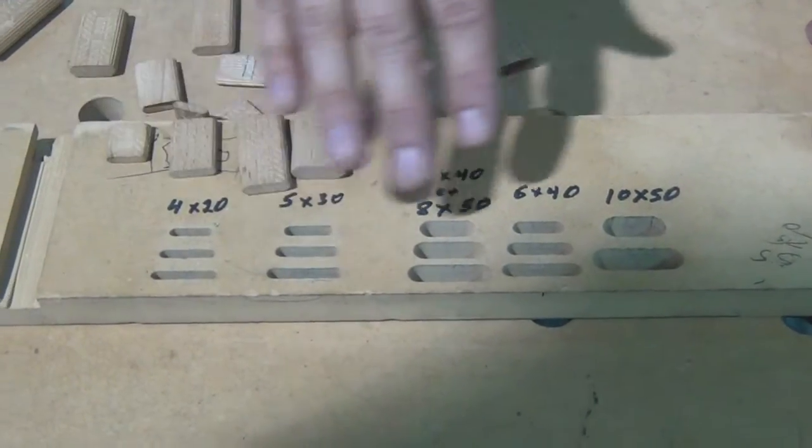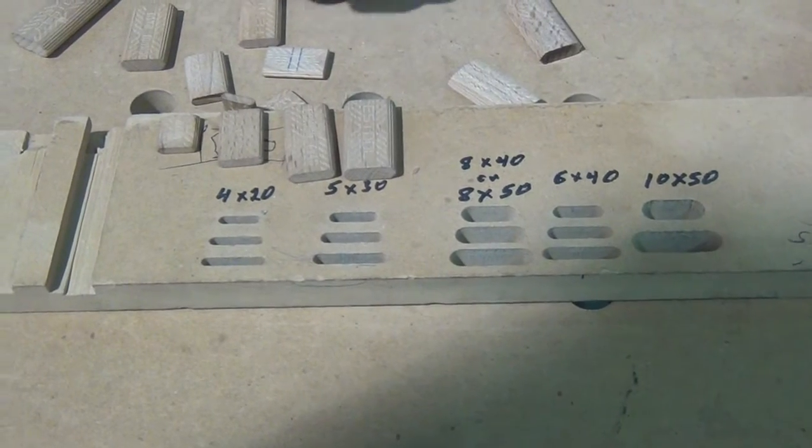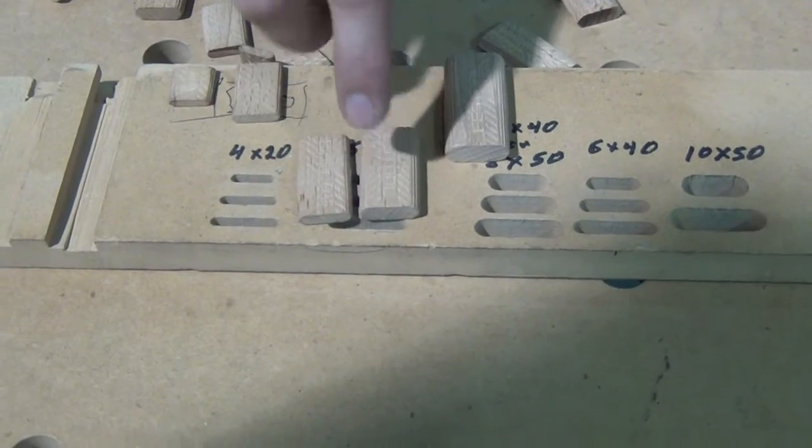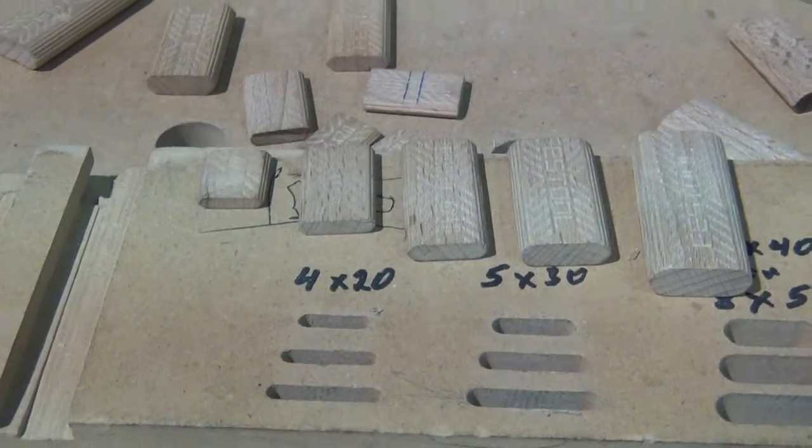This shows you all the different size holes, except around the ten, and then the different size dominoes. So our most common that we sell here are these two, the eight and the six. And I'm going to show you the different sizes and then that will kind of make sense.